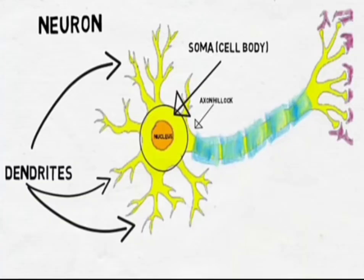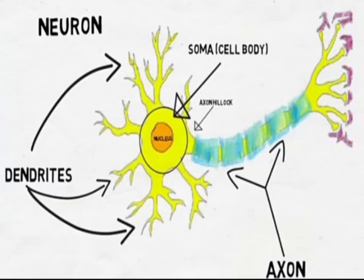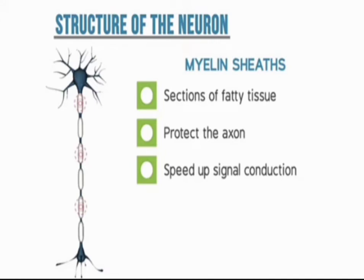Next in the structure of the neuron comes the myelin sheath. The myelin sheath is basically a protective ring around the axon that protects it and speeds up signal conduction. It is made up of fatty acids — fatty tissue.